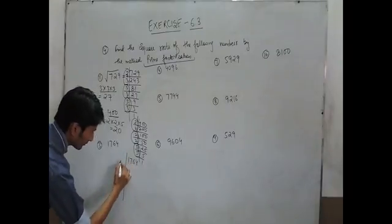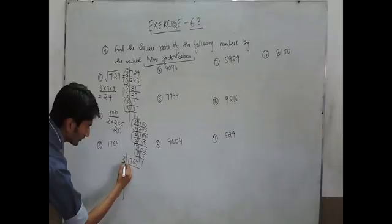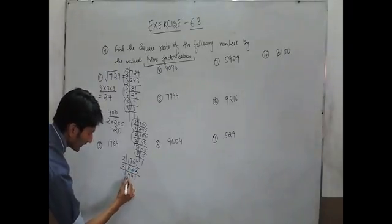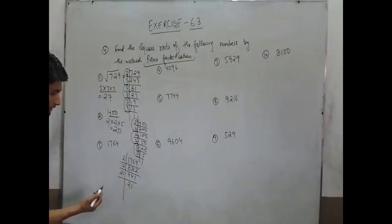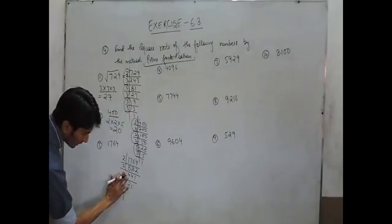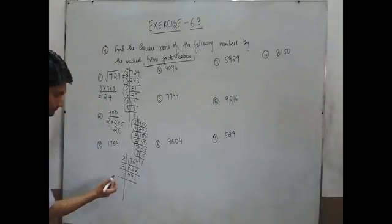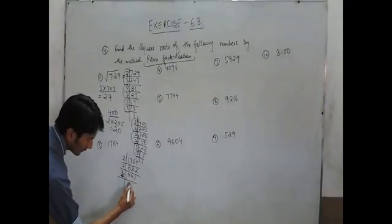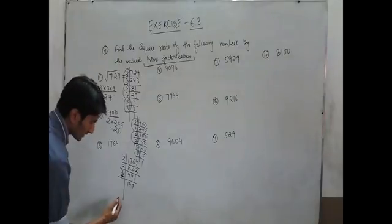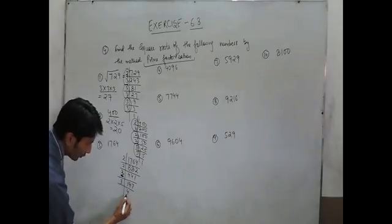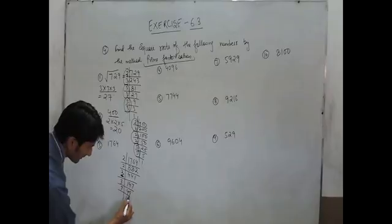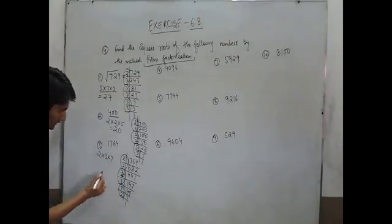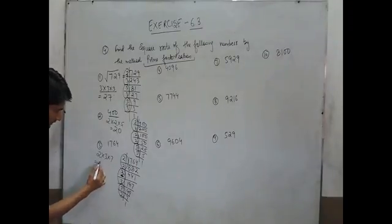Same case with 1764. We find the prime factors. First divide by 2, then again by 2. The remaining part is divisible by 3: dividing by 3 gives us quotients leading down to 7, and again 7. So we get 1 pair of 2s, 1 pair of 3s, and 1 pair of 7s — that is 3 pairs total. Taking one from each and multiplying: 2 times 3 is 6, times 7 is 42. So the square root of 1764 is 42.